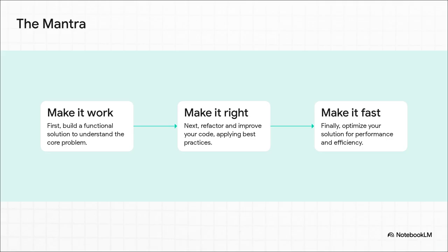Then, once it's working, you make it right — go back, refactor, apply best practices, and build a clean, maintainable system. Only then, once it's working and well-structured, do you make it fast and start optimizing for performance. This approach is the key to taming complexity.